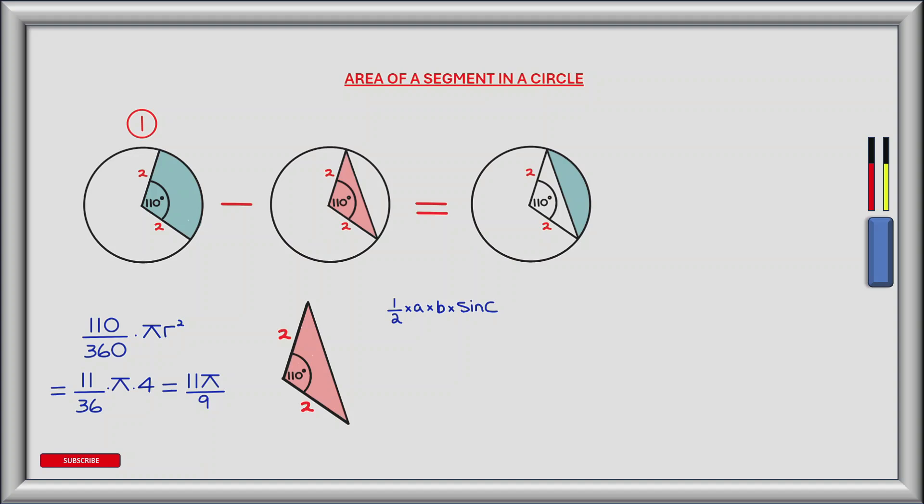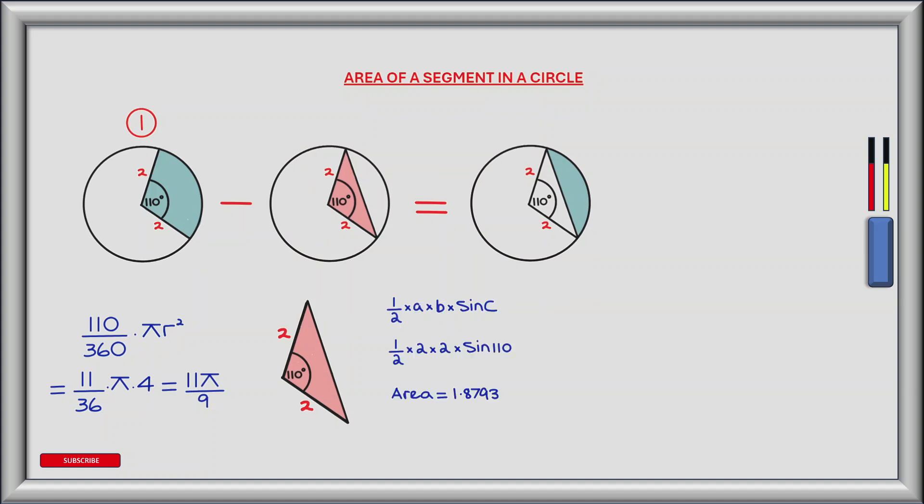The second way to find the area of the red shaded region is to use the formula 0.5 multiplied by A multiplied by B multiplied by sine C, where we know two sides, A and B, and the included angle C. So we know that the two sides have length of 2, and the included angle is 110. So we have 0.5 times 2 times 2 multiplied by sine of 110, which gives us an area of 1.8793.